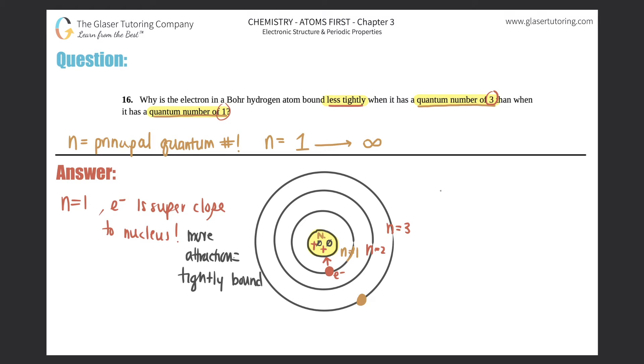As opposed to n equals three, the electron is farther away, right? This electron here is farther away.